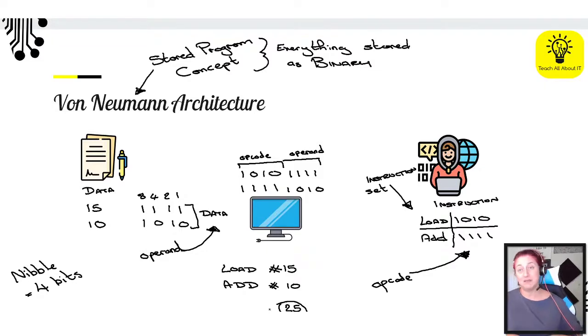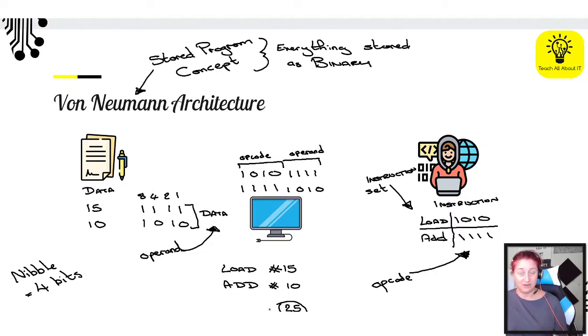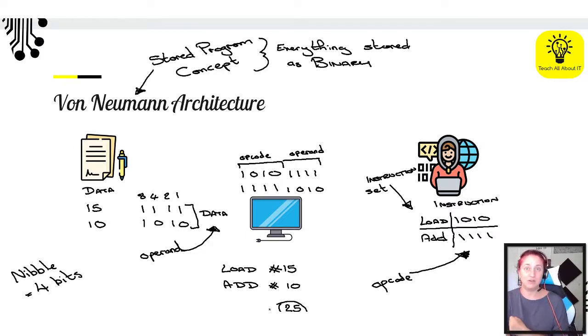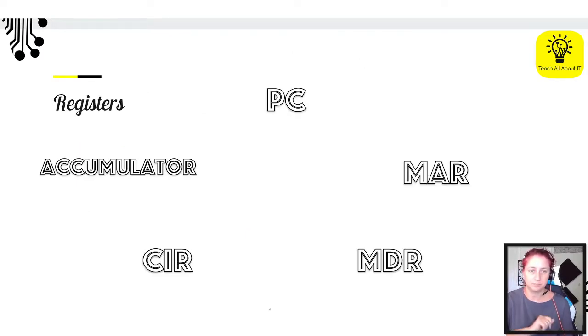When we talk about the Von Neumann architecture, we mean the stored program concept — everything, instructions and data, are both stored as binary inside the machine. And that's why you need to have your decode step.